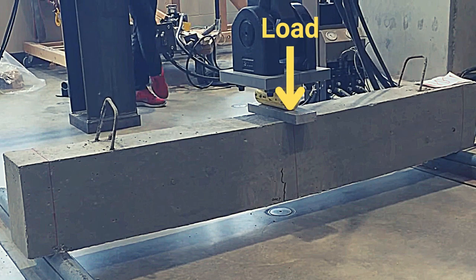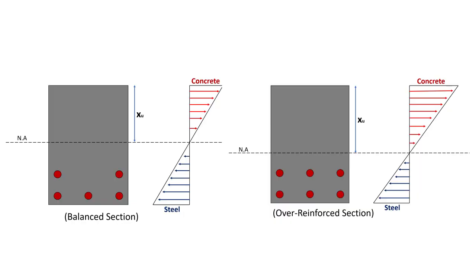However, in the case of balanced and over reinforced sections, the failure of concrete occurs either at the same time or prior to the failure of steel. Since concrete is brittle in nature, it will collapse suddenly without giving any warning to the users of the structure, thus resulting in loss of life and property.